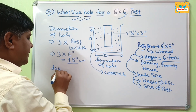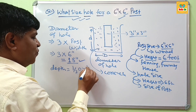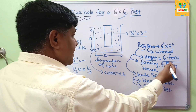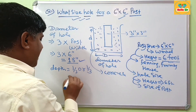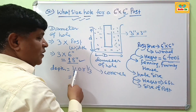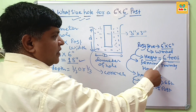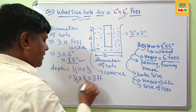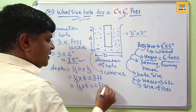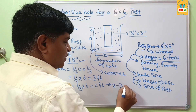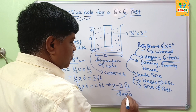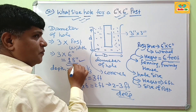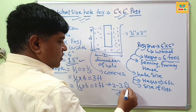The depth should be 1/2 or 1/3 of the post height above the ground. The height here is 6 feet. So 1/2 multiplied by 6 gives 3 feet, and 1/3 multiplied by 6 gives 2 feet. This means the depth of the post hole should be 2 to 3 feet deep. Therefore, the hole required for setting this post needs a diameter of 18 inches and a depth of 2 to 3 feet.